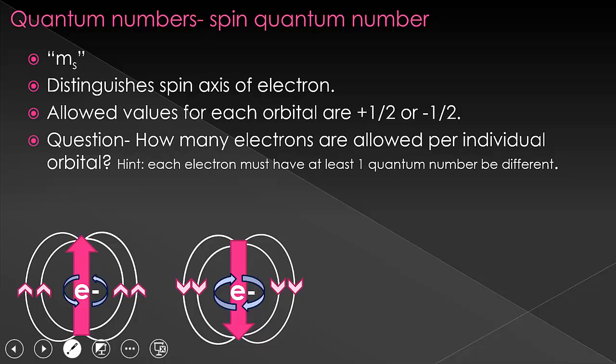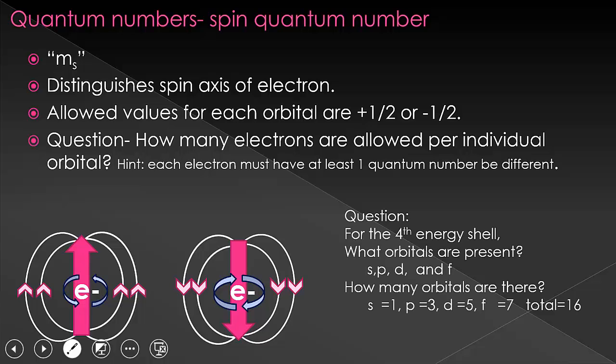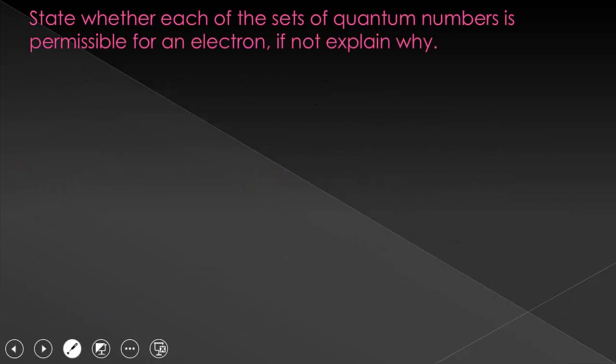Let's continue with our question on the fourth energy shell. We decided that for the fourth energy level, there were S, P, D, and F orbitals, and that gave us a total of 16 orbitals. Given this new quantum number M sub S, allowing us to have two electrons per orbital, how many electrons are allowed in the N equals four level? Well, if we know that we have 16 orbitals, we can multiply that by two, leaving us with 32 electrons.